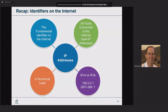So for technical background — I hope this isn't too basic, but I want to make sure we're all on the same page. Looking at DNS and how it works, with a focus on the root server system: the fundamental identifier on the Internet is the IP address, a string of bits we usually see as a numerical label. We have two versions of the Internet protocol: IPv4 and v6.